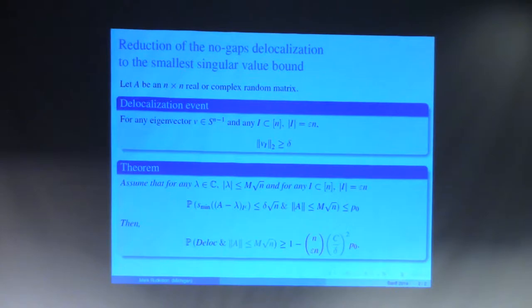Here I rewrote the definition of the delocalization event. We proved that we can reduce delocalization to the uniform bound of the singular values of the matrix A minus lambda for any deterministic lambda. If we manage to prove such a bound, then we have shown the probability of the delocalization event is likely, multiplying by the binomial coefficient and some harmless discretization term.